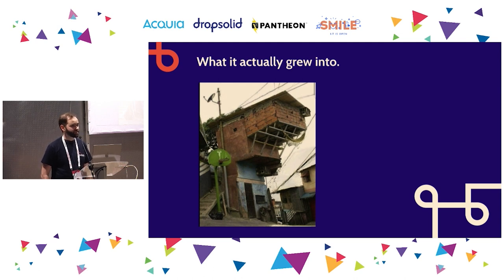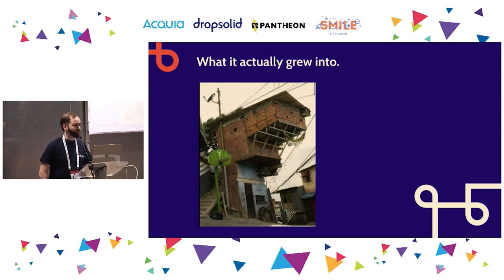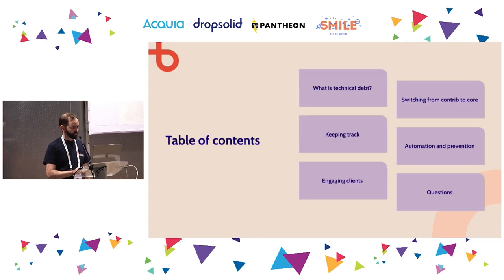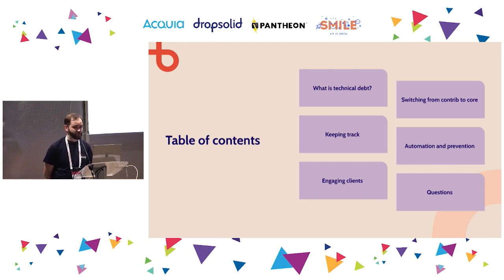Usually with these kinds of projects you have two options: either start from scratch — in the past, a new Drupal version gave us an excuse to rebuild — or, with Drupal 8 and beyond, we need to do better. We need to fix more and keep that code alive because sites live longer now. Today we'll cover: what is technical debt, how to keep track of it, how to engage clients since budget is always involved, switching from contrib to core modules, and automation and prevention.